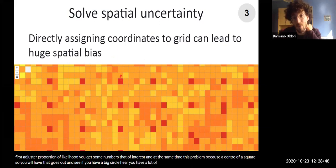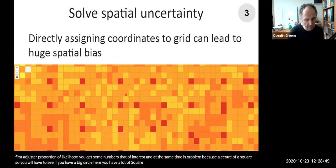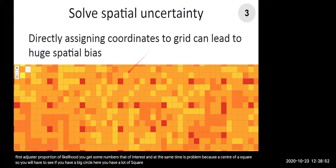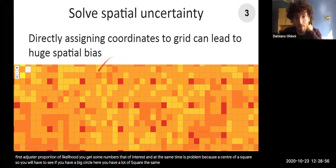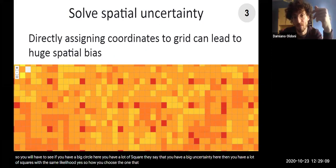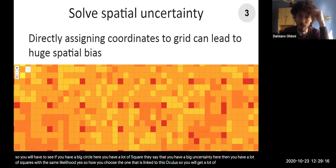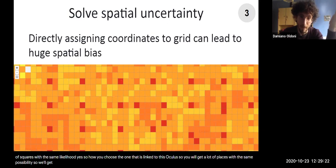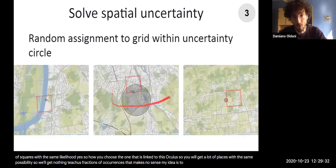So let's say that you have a big uncertainty here. Then you have a lot of squares with the same likelihood. Yes. So how you choose the one that is linked to this occurrence? So you will get a lot of x equal, let's say. So there's a lot of occurrences with the same possibility. So you'll get not integers. You have fractions of occurrences. That makes no sense.